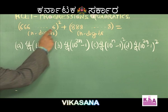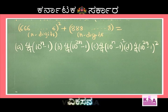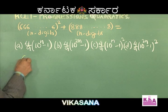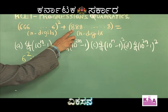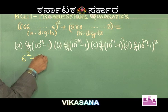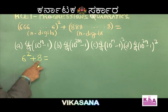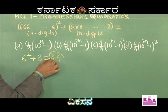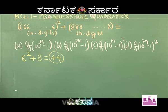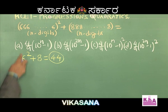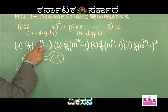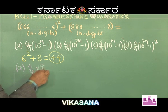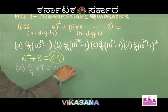Instead of working with n digits, I'll substitute n = 1. With n = 1 we get 6² + 8 = 36 + 8 = 44. Now substitute n = 1 into each option. Option A: (4/9)(10¹ - 1) = (4/9)(9) = 4. That doesn't equal 44, so option A is ruled out.